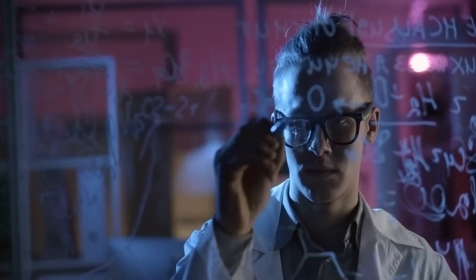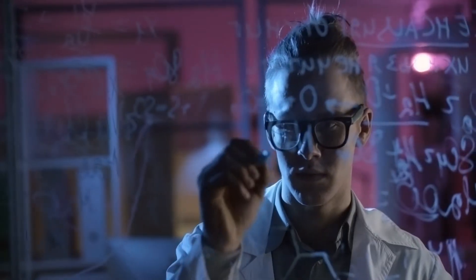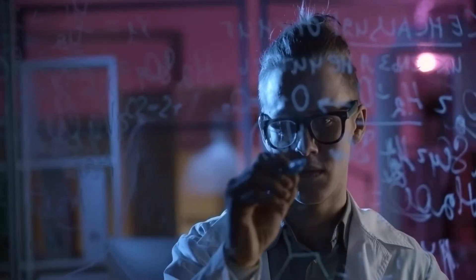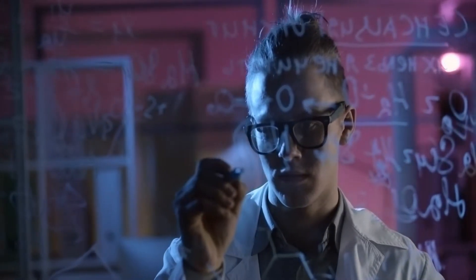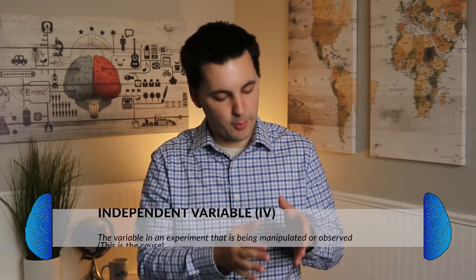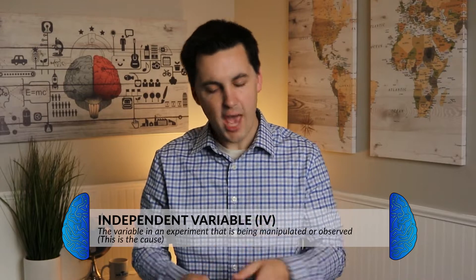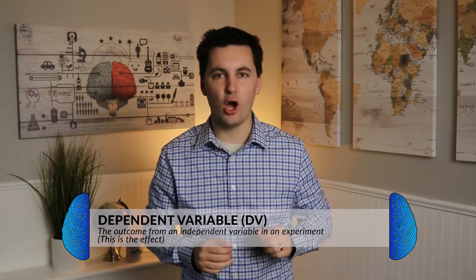Experiments allow researchers to understand if one variable causes another variable — this is known as a causal relationship. When looking at a causal relationship, we're looking at the relationship between an independent variable, which is the cause, and a dependent variable, which is the effect. Remember: independent is the cause and dependent is the effect — that's going to be important for you to remember.